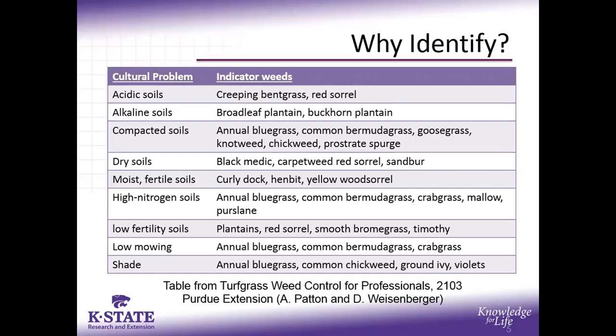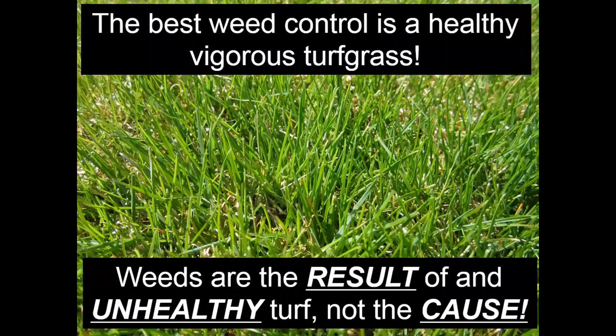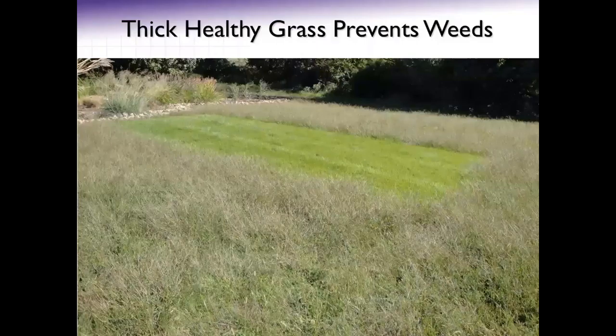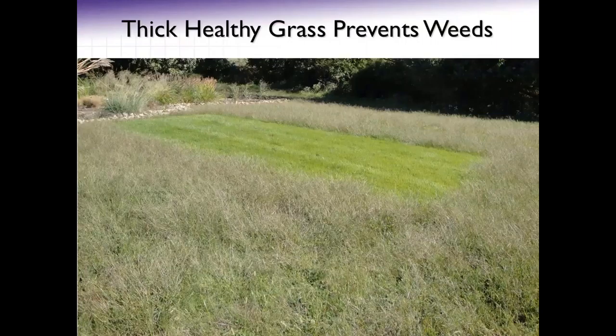The best weed control is a healthy, vigorous lawn. Weeds are the result of unhealthy turf, not the cause. Your turf doesn't look bad because you have weeds — you have weeds because you didn't maintain the turf correctly. Here's a perfect example: this is all crabgrass around a newly established, healthy zoysia grass that's properly watered and fertilized, and it is attacked from all sides by crabgrass, but there's none in it. So thick and healthy is the best thing you can do for weed control.